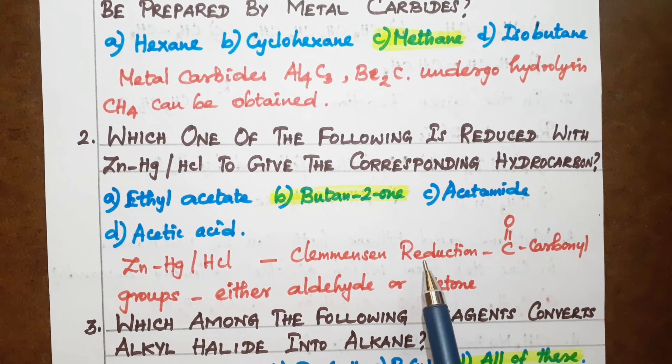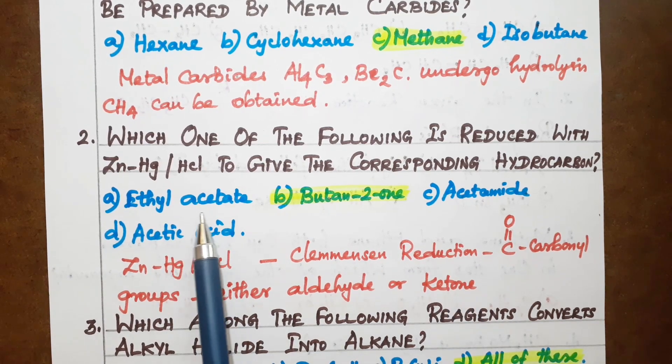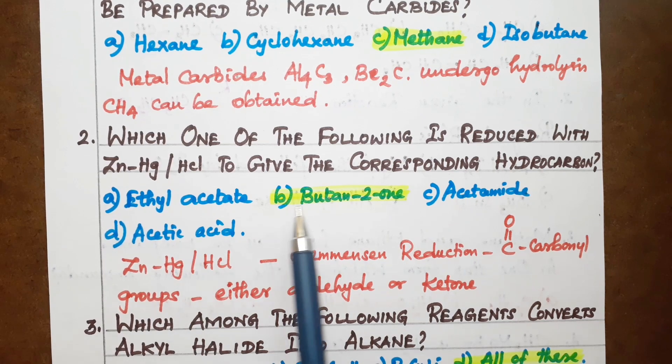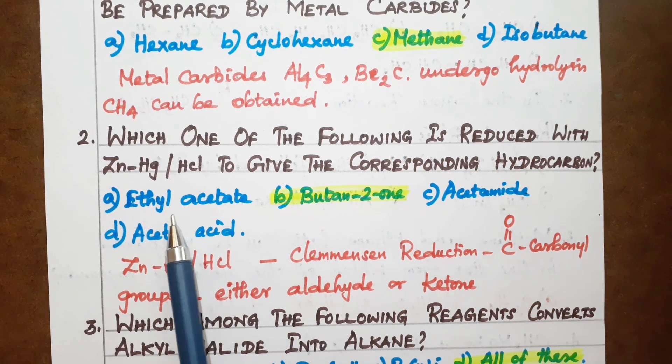Aldehydes or ketones is the method. Follow up in the previous video. Carbonyl compounds, aldehydes or ketones. This is ethyl acetate.